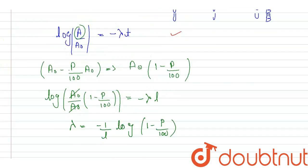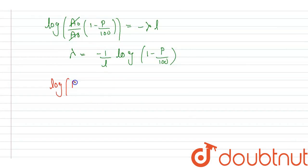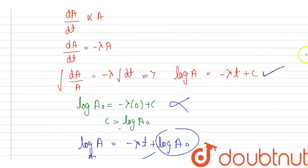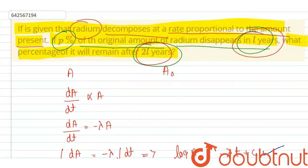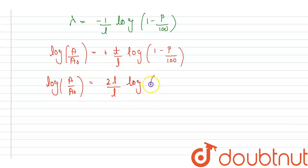Now, substituting the value of lambda into the equation, we get log(A upon A0) equals (T upon L) times log(1 minus P upon 100). For T equals 2L, it becomes log(A upon A0) equals (2L upon L) times log(1 minus P upon 100). The L's cancel, and the 2 goes inside as a square by the log power property.